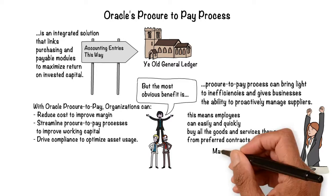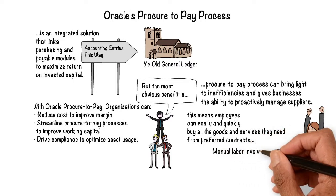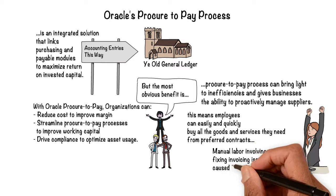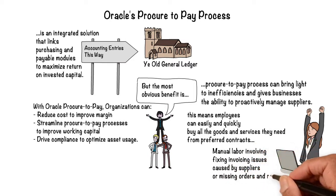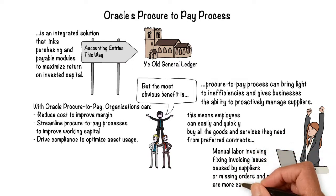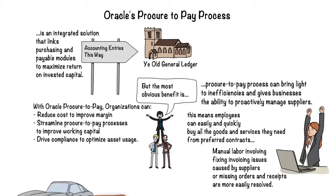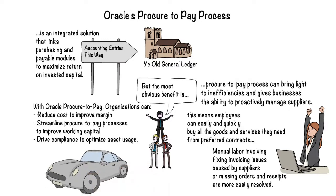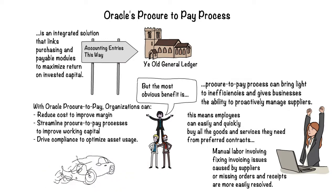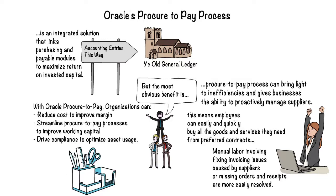Manual labor involving fixing invoicing issues caused by suppliers, missing orders, and receipts are more easily resolved. The P2P cycle can offer an organization a complete platform with procurement of goods and services, raw material components, office supplies, etc.